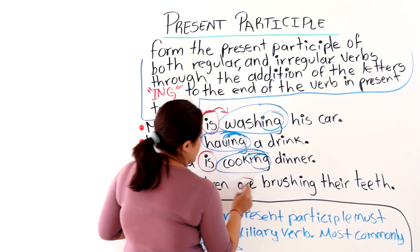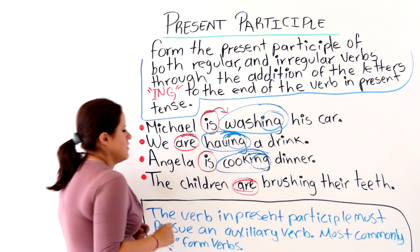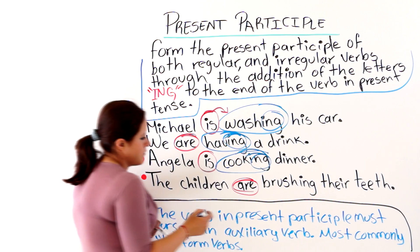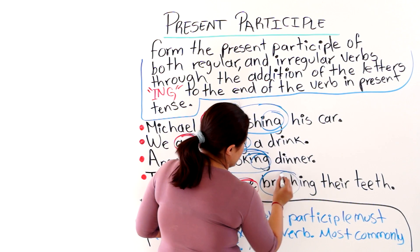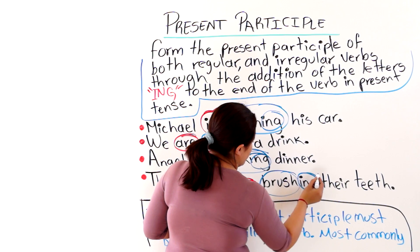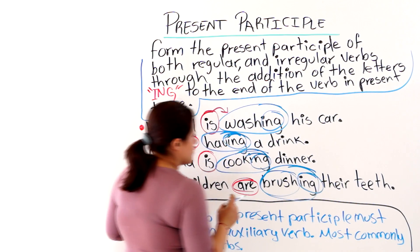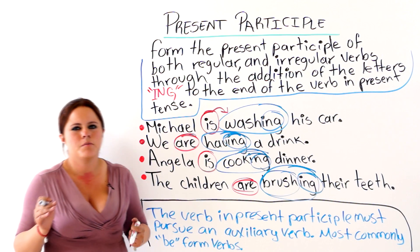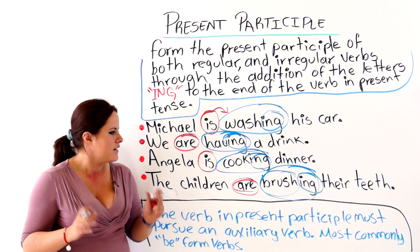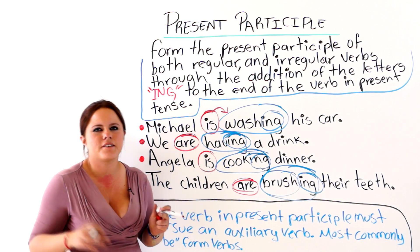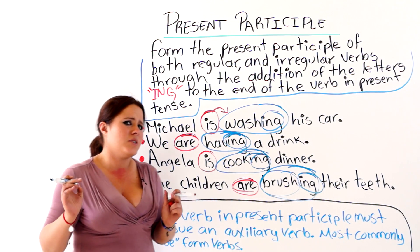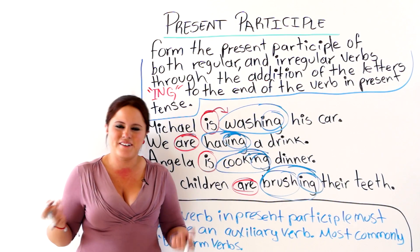We have are, the present tense of the verb be. We have the verb brush plus ing, which creates the present participle. Next, I will give you some more practice examples and sentences so that you can keep practicing along with me.